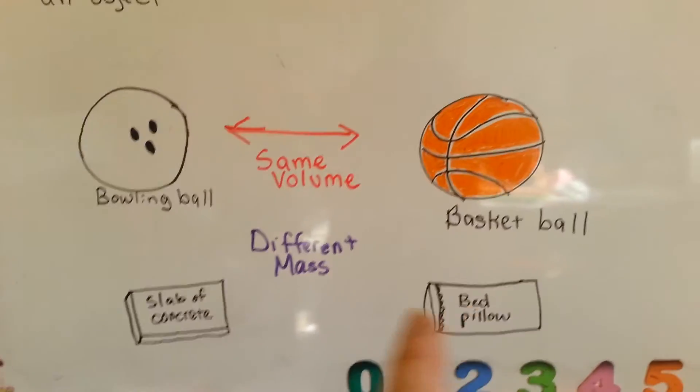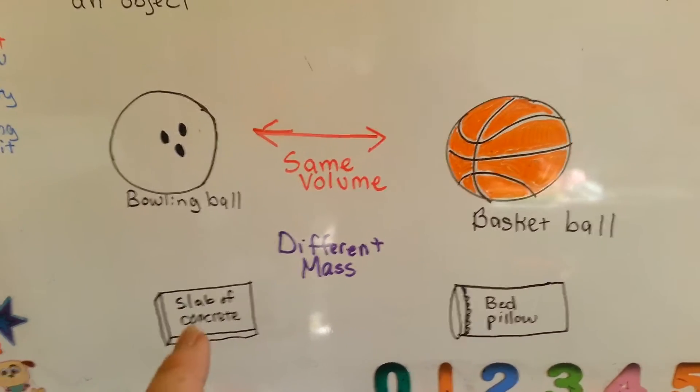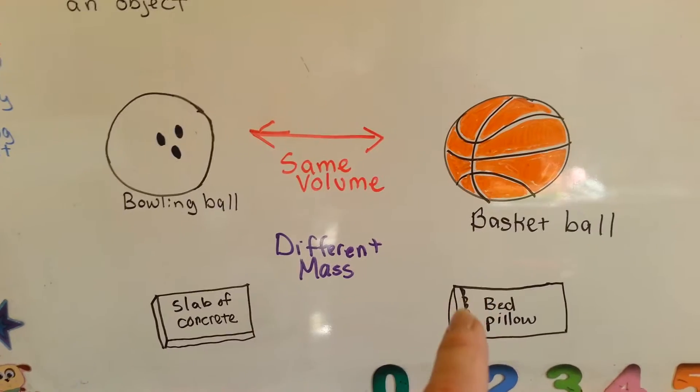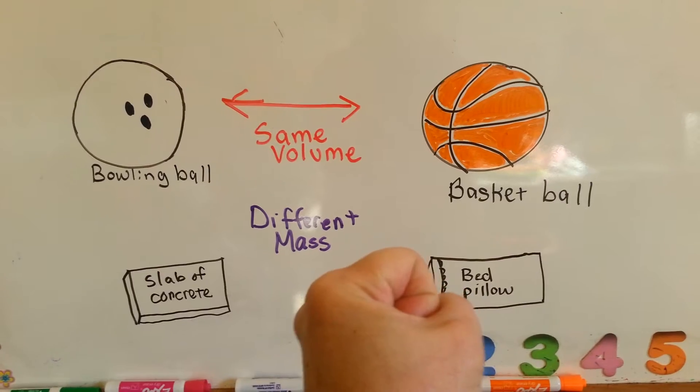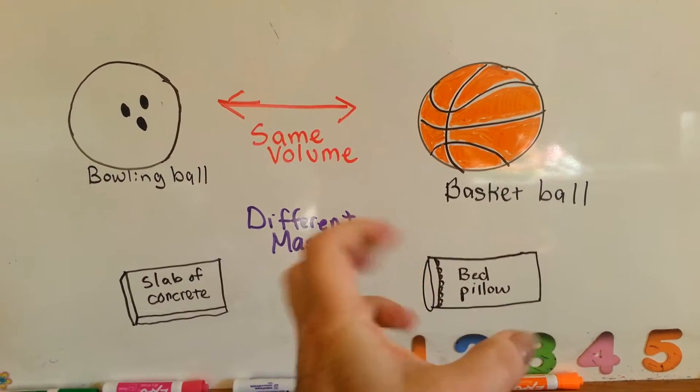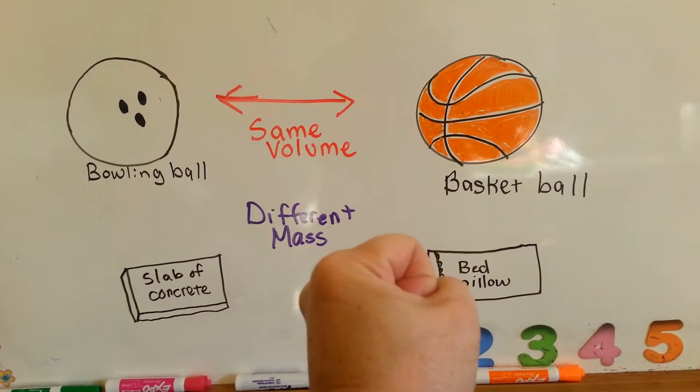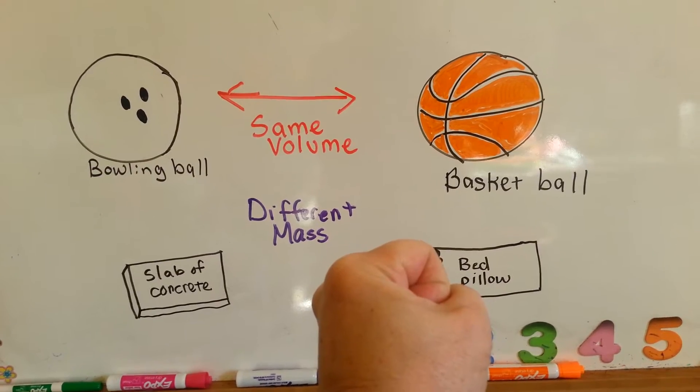Think of a bed pillow that's the same size as a slab of concrete. You could take this bed pillow and squish it into a smaller object, couldn't you? You could condense it and squish it down tighter and smaller and get all the air out of it.